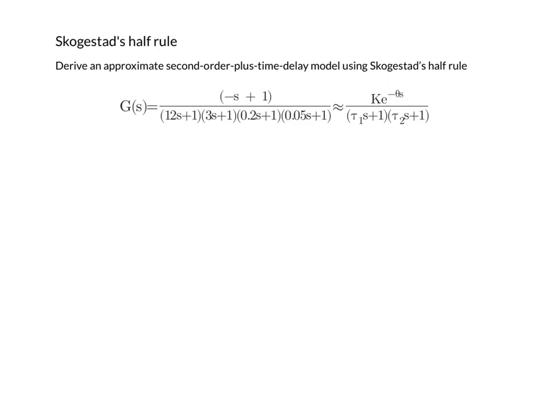Skogestad's half rule is a systematic way of reducing the order of a transfer function. I'll explain how to apply this method using this example.